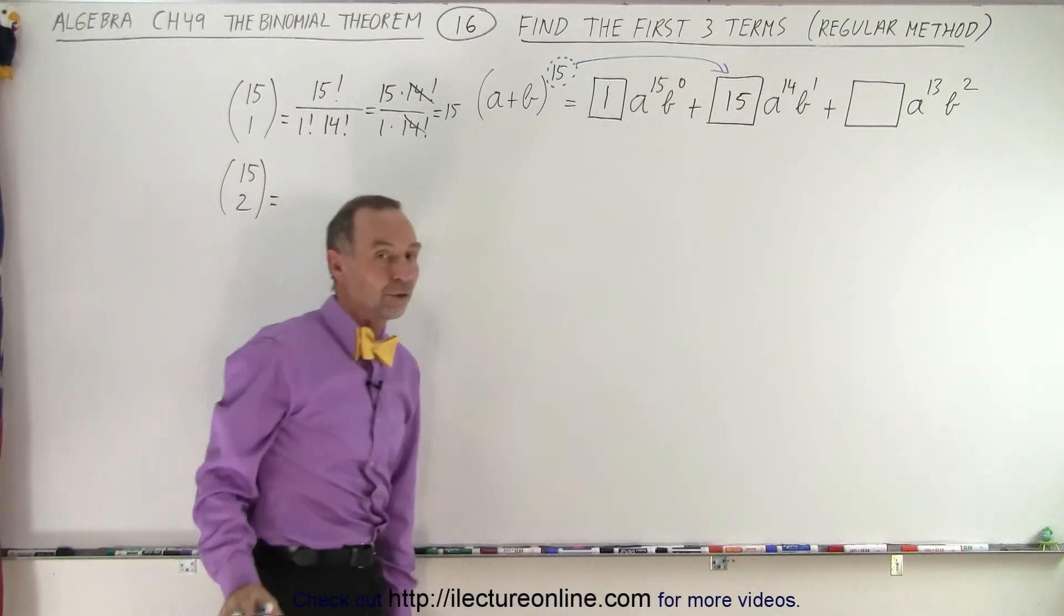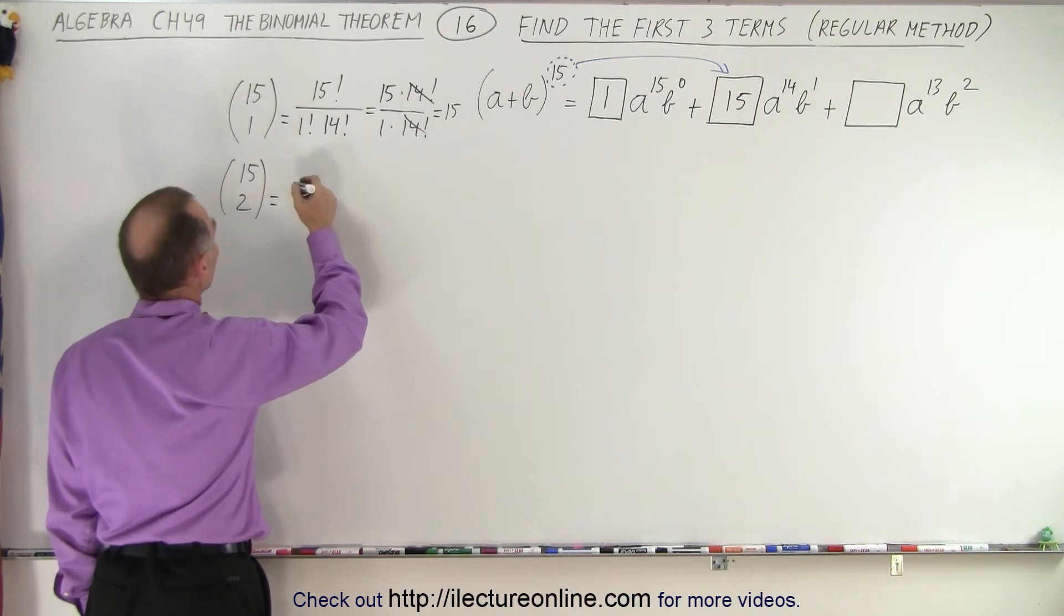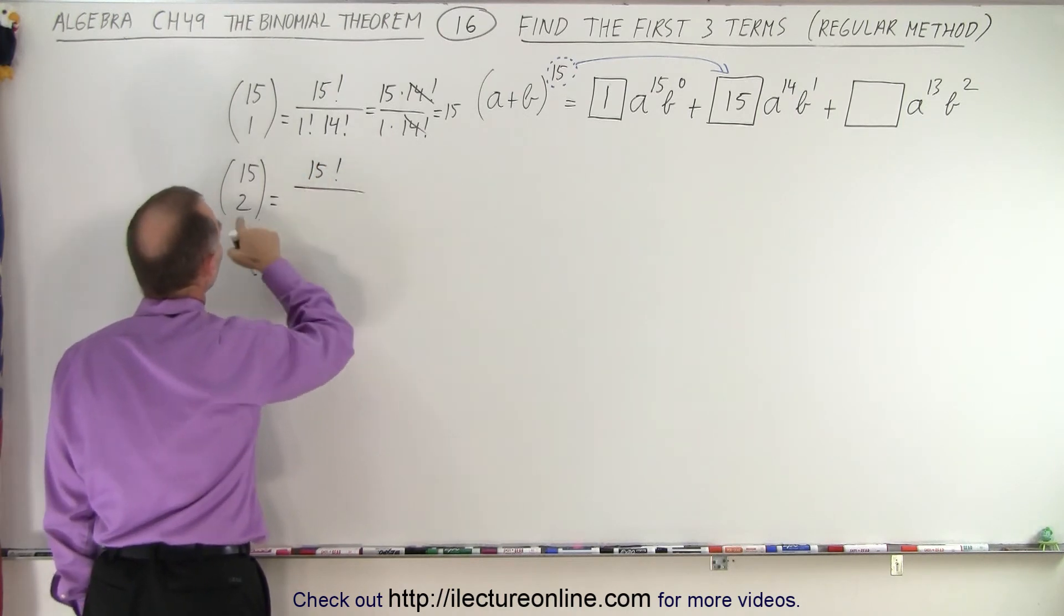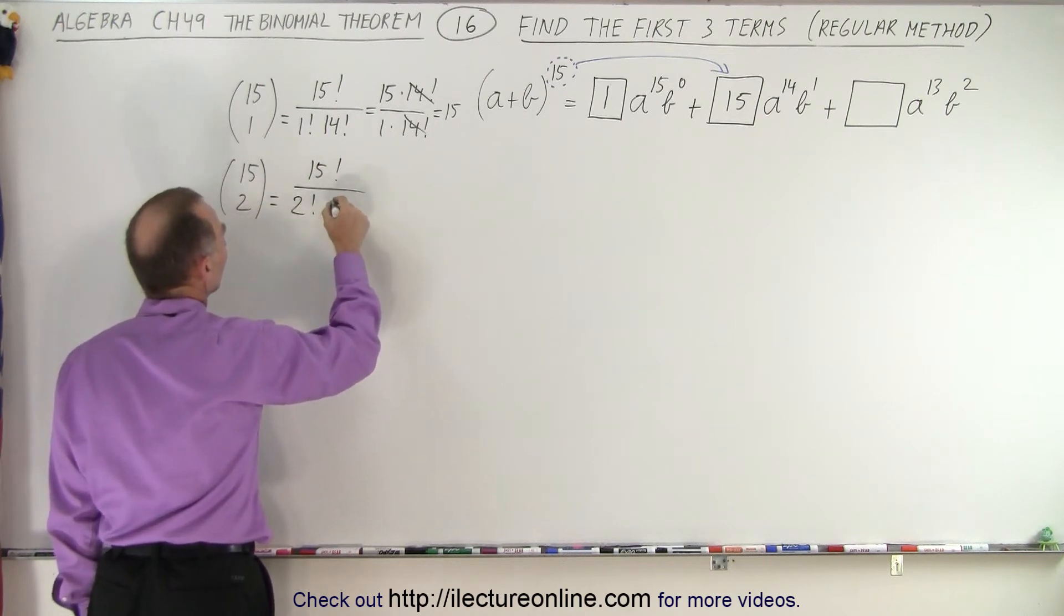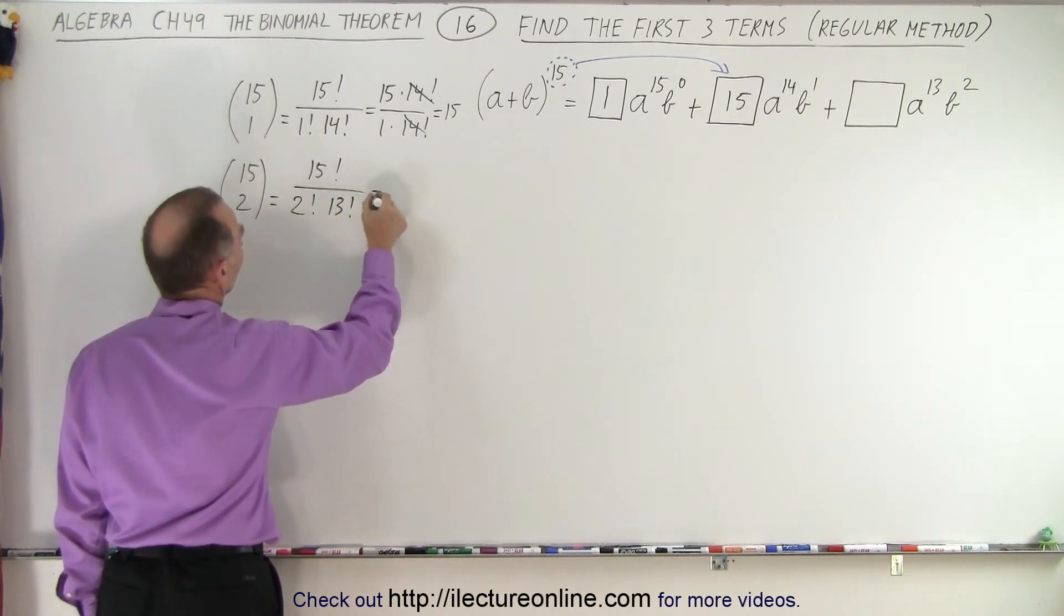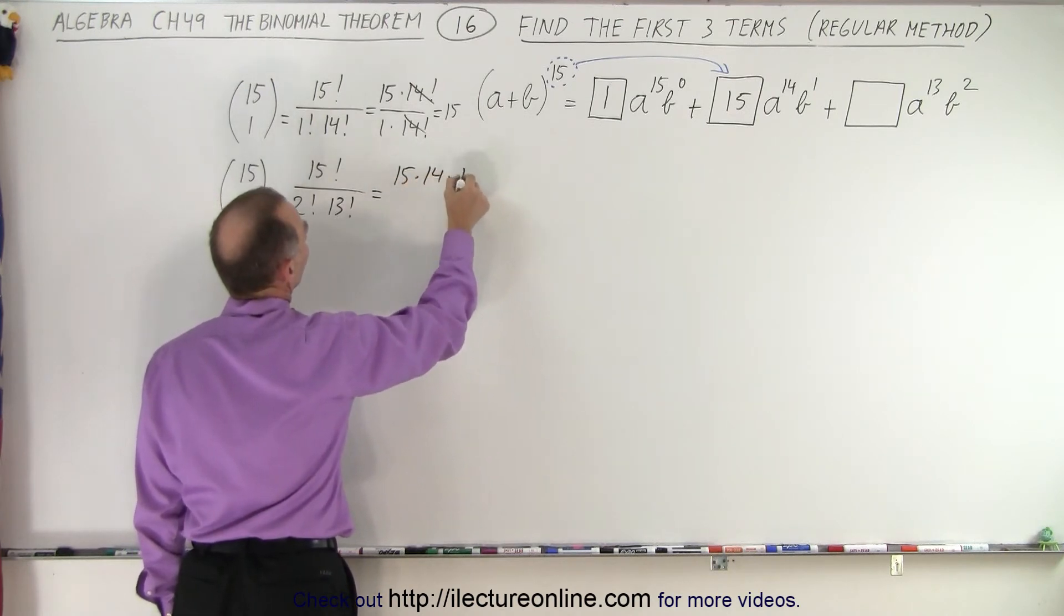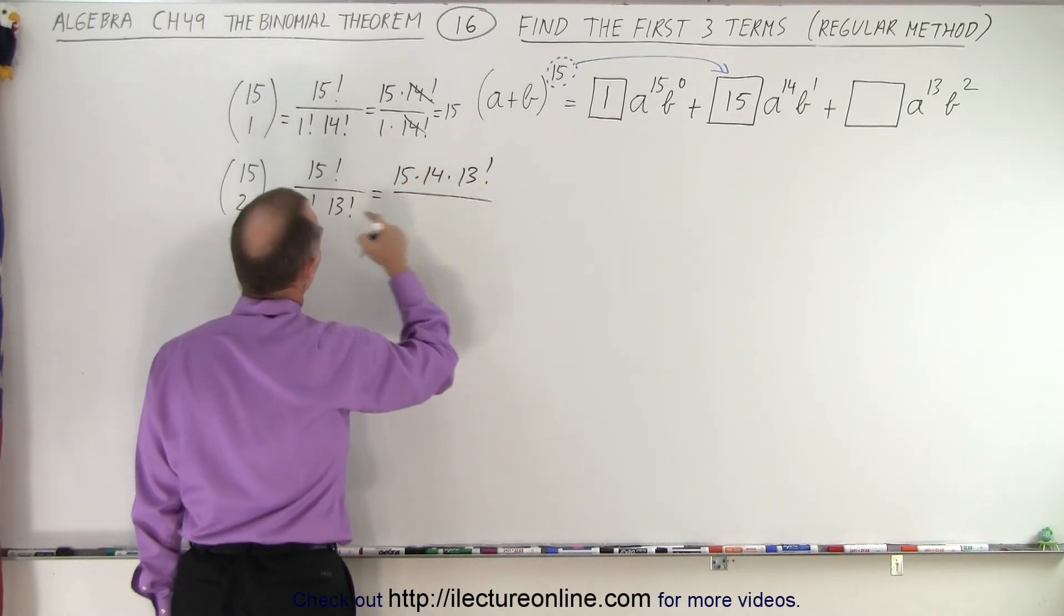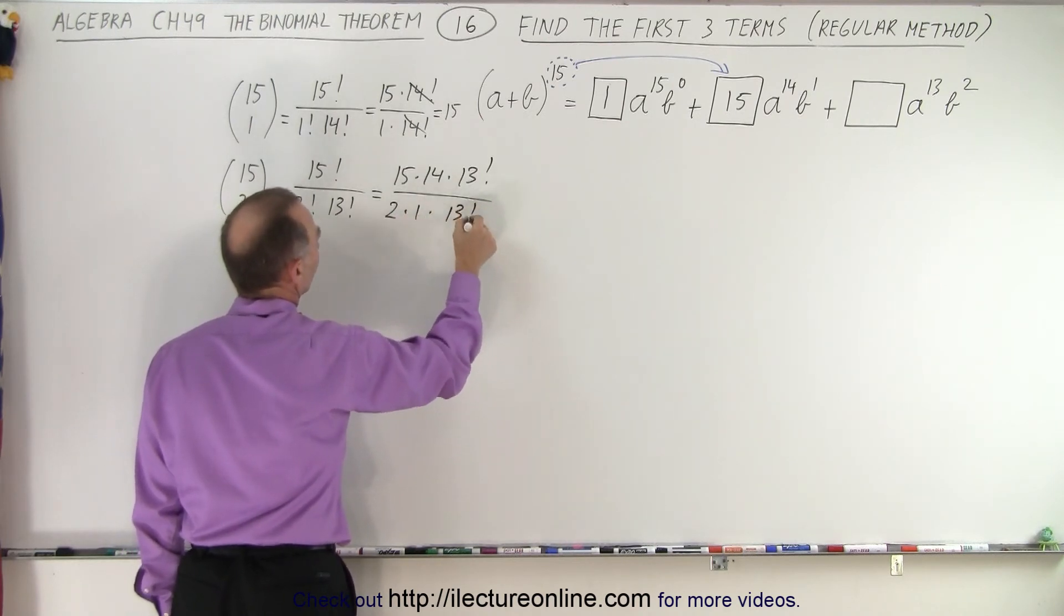So we end up with 15 factorial divided by two factorial times the difference between the two, 13 factorial. So in this case, that is equal to 15 times 14 times 13 factorial divided by 2 factorial, which is 2 times 1 times 13 factorial.